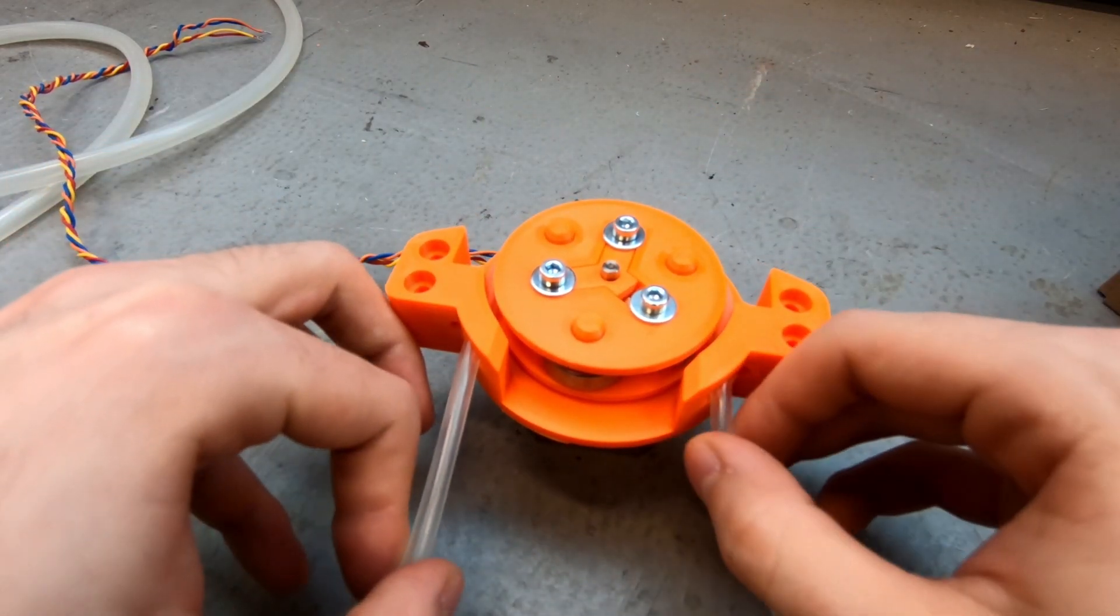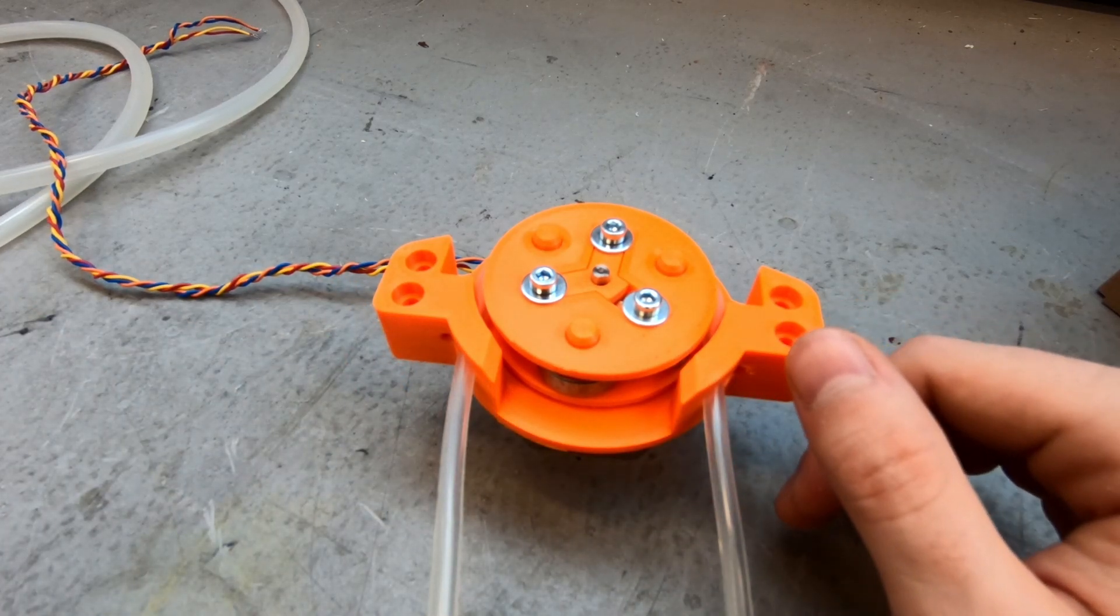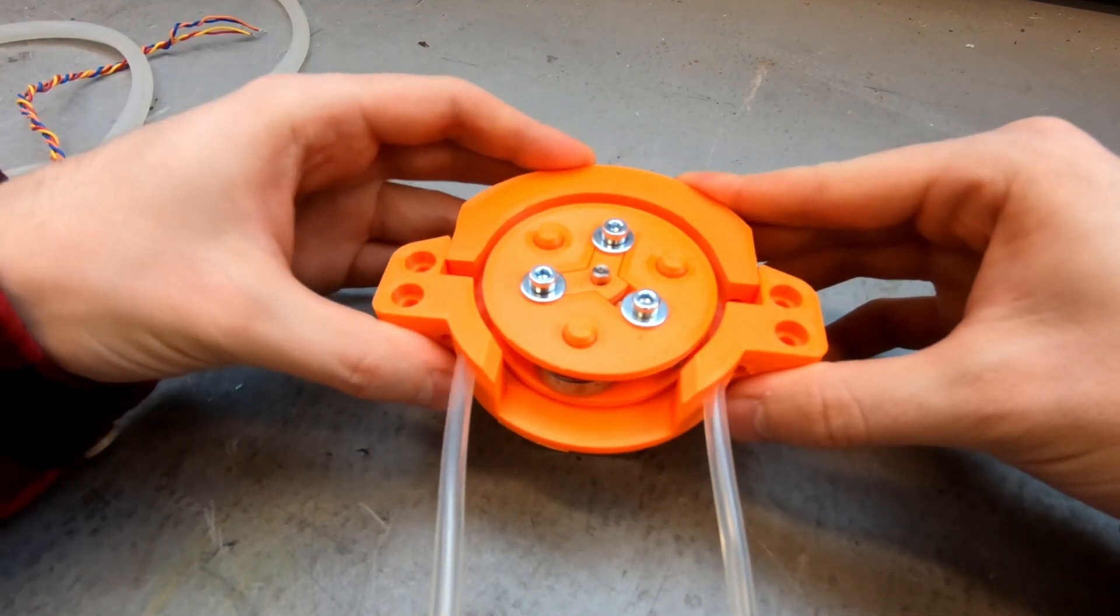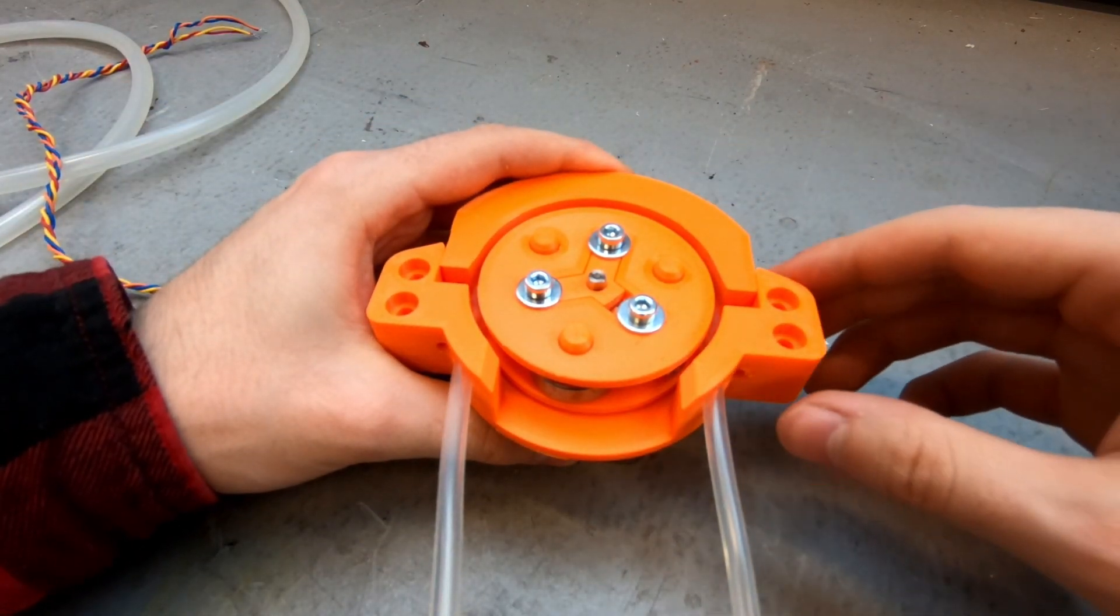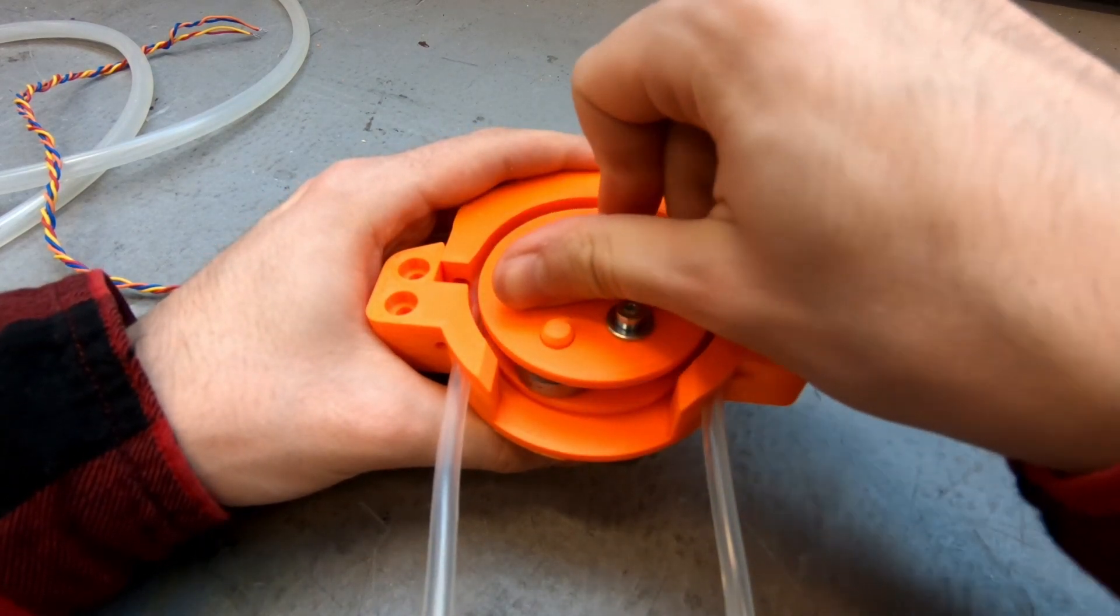We'll tighten the tube around the rotor. And finally we're going to add the top bracket to squeeze the tubing between the bracket and the rotor. And there we have it, a working peristaltic pump.